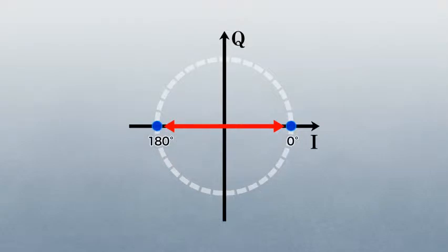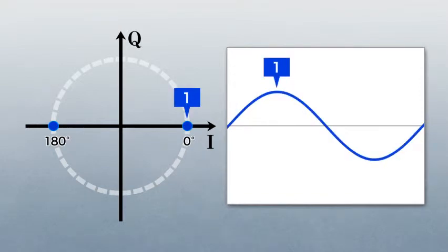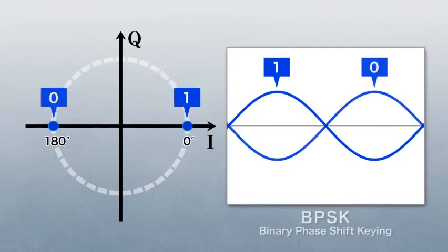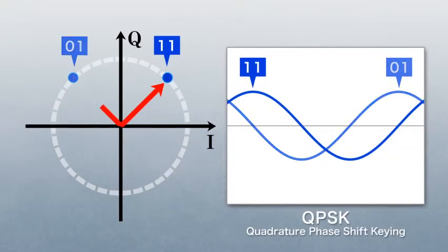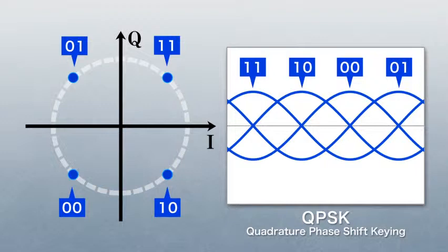As shown here, 1 and 0 correspond to phases 0 degrees and 180 degrees in the BPSK. The QPSK, meanwhile, uses phase differences of 90 degrees. Four phase values are used in one optical symbol, which enables us to double the amount of information compared to BPSK.